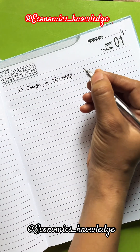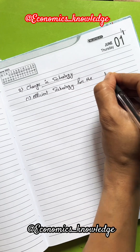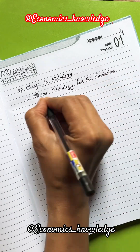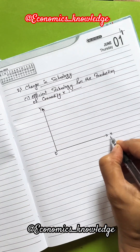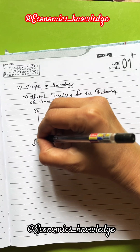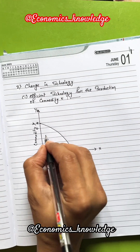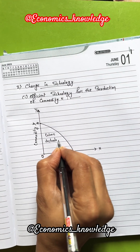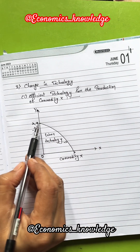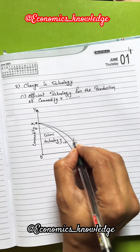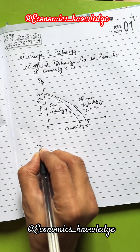The next condition is change in technology. Here we have efficient technology for the production of commodity X. Let's see the diagram. Commodity X and commodity Y are given. This is the production possibility curve with the given technology. This curve will rotate from AB to AB1 because efficient technology for the production of commodity X is given.